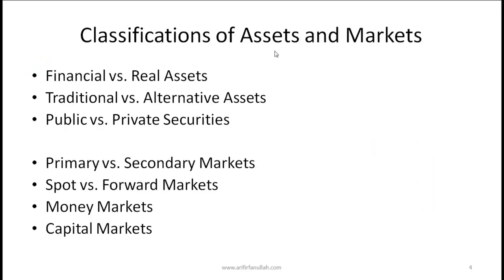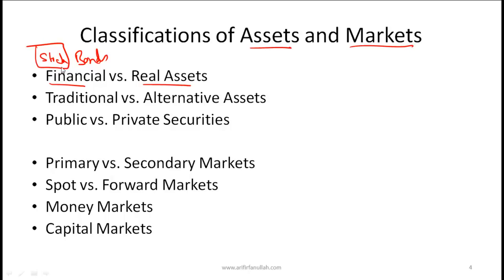Now let's talk about the classifications of assets and markets. Financial assets versus real assets: financial assets are stocks, bonds, derivatives and so on — they don't have a real physical substance. A stock is essentially a claim on future cash flows or ownership in a company; a bond is a promise of certain future cash flows from the issuer. Real assets are tangible — property, plant, equipment and so on.